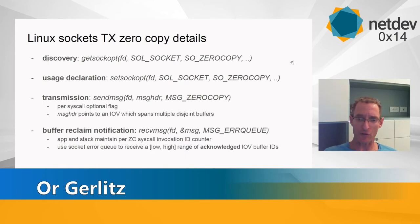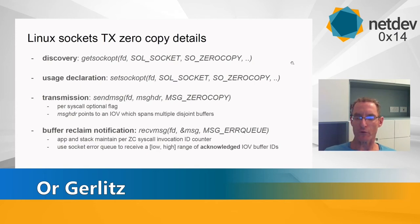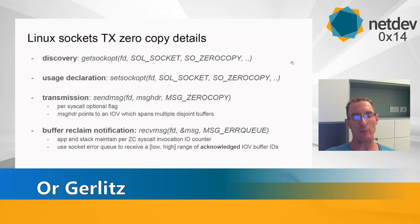The fourth and most involved step is the buffer reclaim notification. The socket provider has to register and pin the buffer, and when done must notify the application that it can reuse the buffer. This works via the socket error queue. Both the application and the stack maintain an invocation ID counter incremented per sendmsg call, and notifications are provided as a closed range — for example, six to eleven — representing acknowledged iovec buffer IDs.